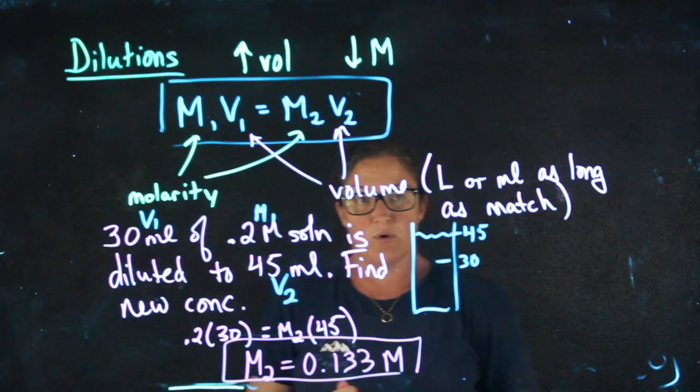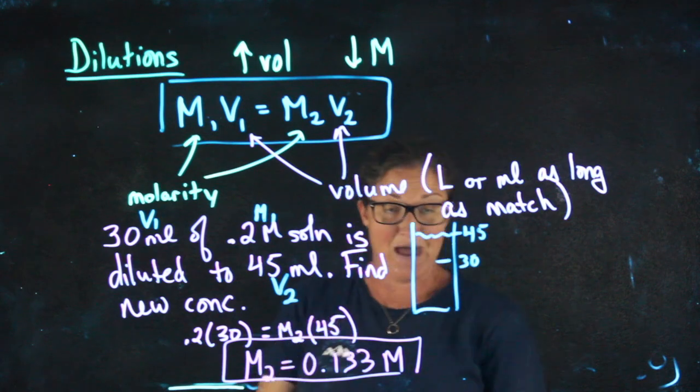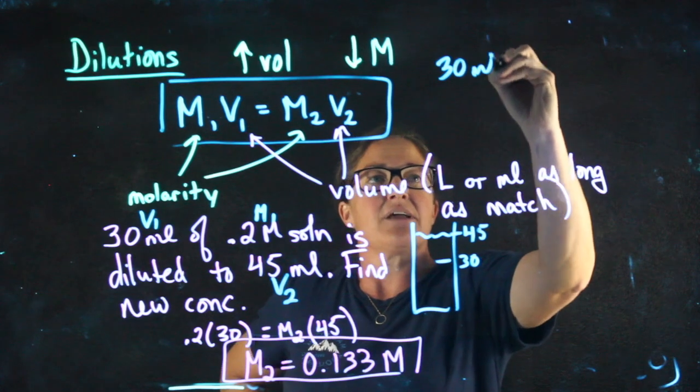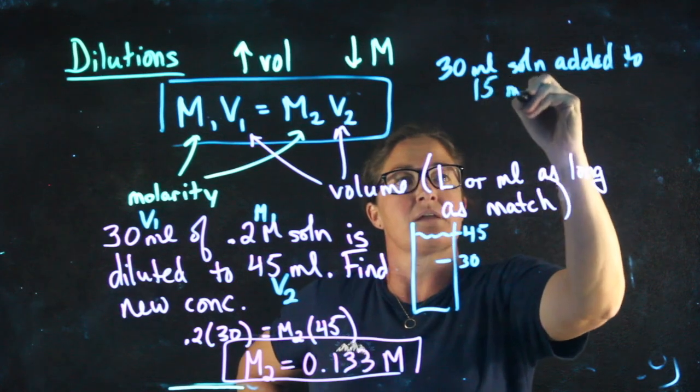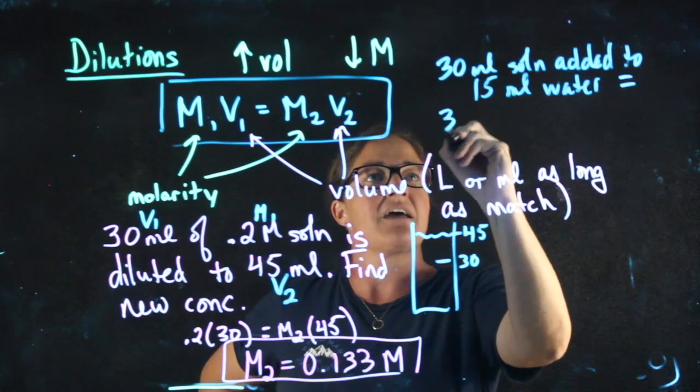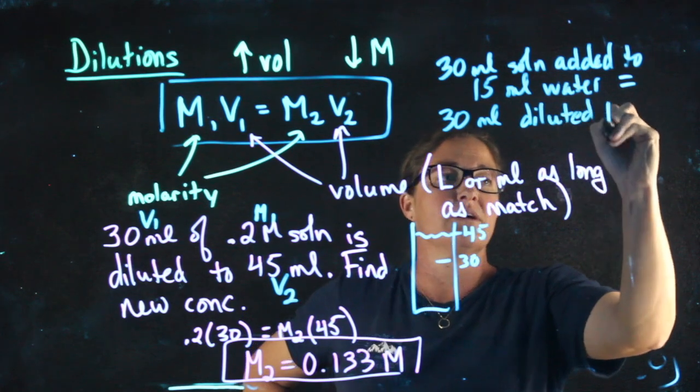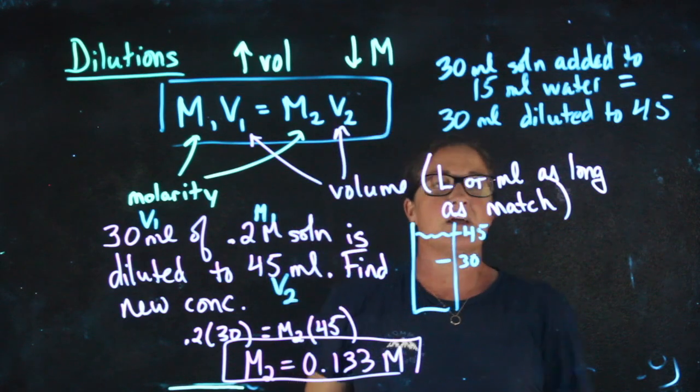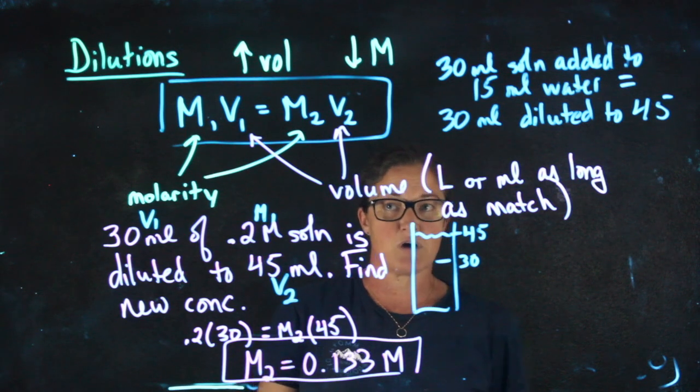One thing you're going to need to be careful with in problems like this is whether we are saying it's diluted to 45 versus added to some amount. For this problem, I could have said 30 milliliters of solution added to 15 milliliters of water, because those two things combined would give me 45, and this is the same thing as 30 milliliters diluted to 45. In one case you'll have to combine things to find V2, and in the other case we're going to give you V2 directly. And you need to be careful of the difference between those two types of problems.